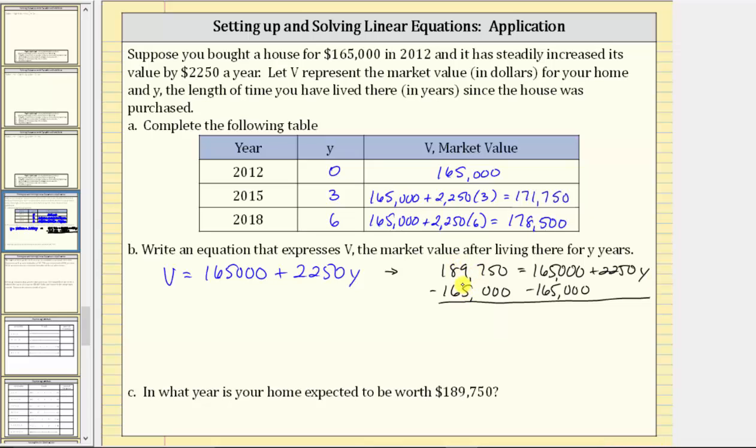Subtracting on the left, this difference is $24,750. On the right side, this difference is zero, which is the reason why we subtracted this amount on both sides. The right side is now just $2,250Y.